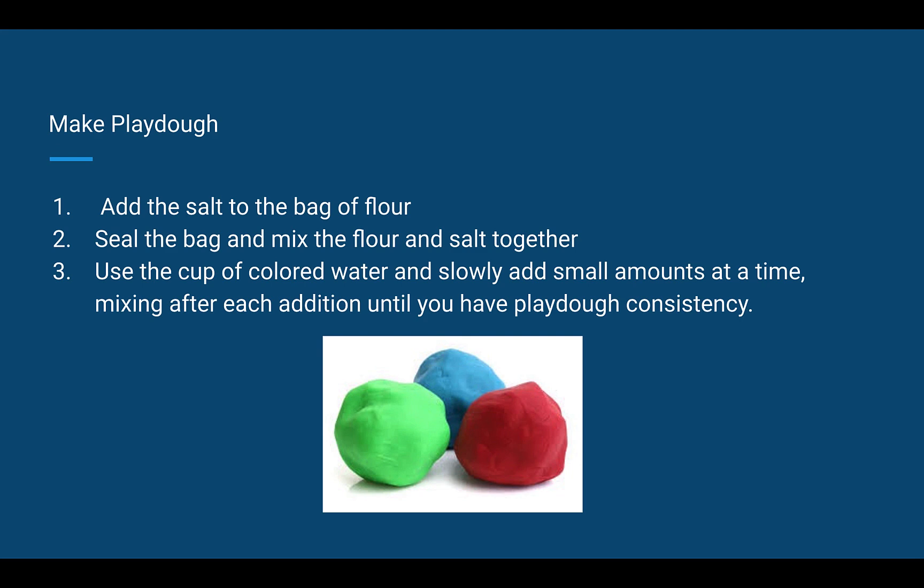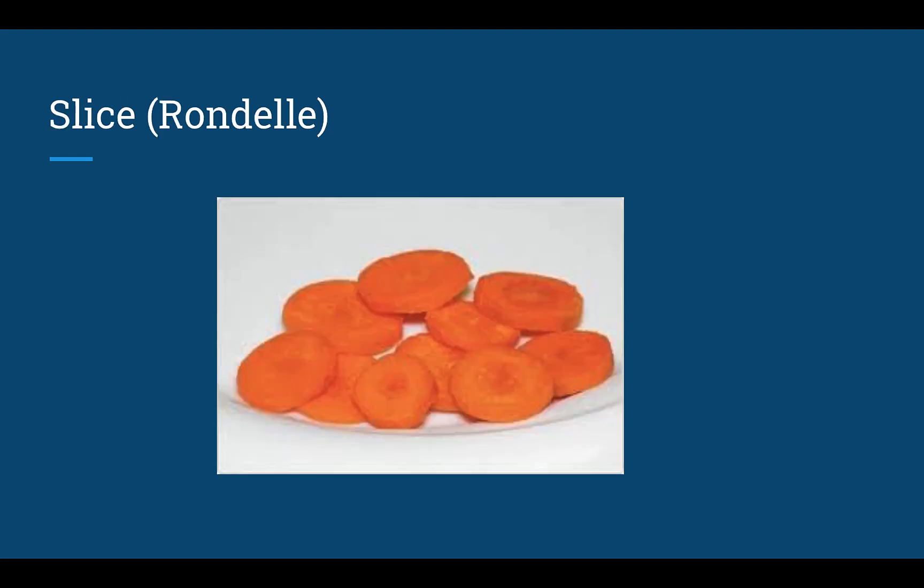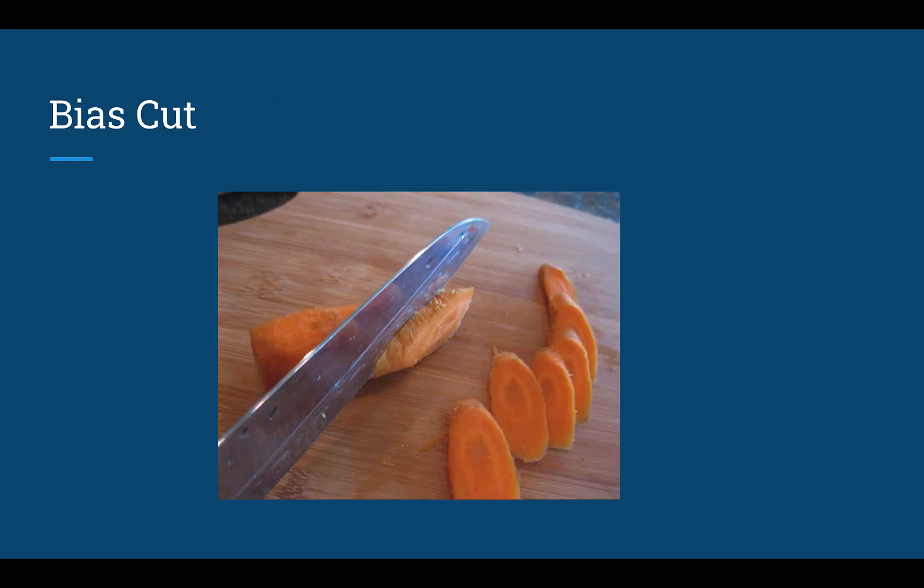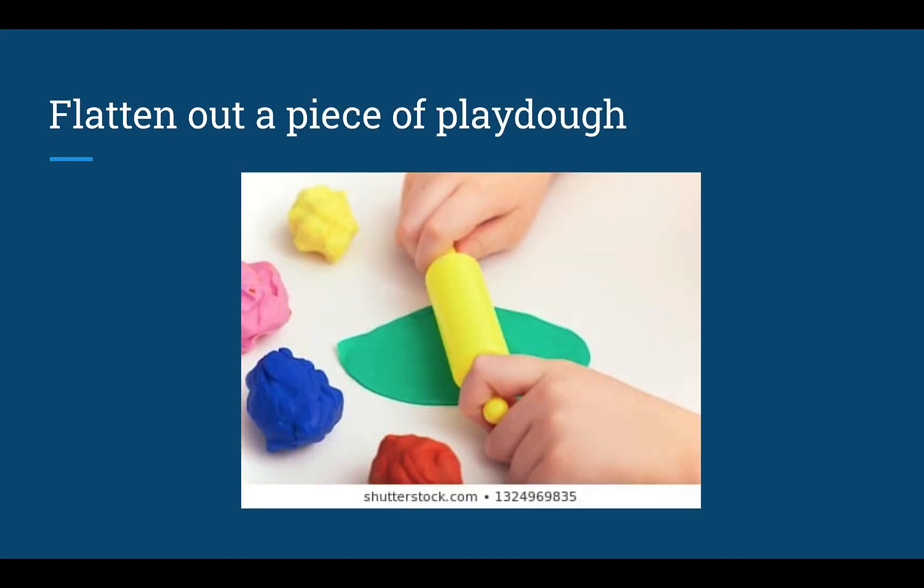So today we're going to make some play-doh and we'll go through that here in a little bit. You have salt and flour, you're going to mix those together and then put in colored water slowly until you get play-doh consistency. So we'll do that together here in a minute. And then once we have play-doh, just to kind of an overview of what to expect, we're going to form the play-doh into kind of a log just to be a carrot. And then we're going to do a rondelle knife cut and that would be just slicing the carrot regularly. We'll do a bias cut, a little more fancy, and then an oblique cut.